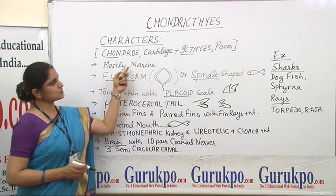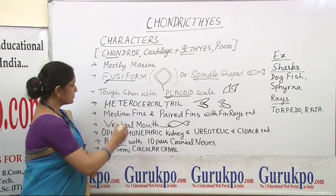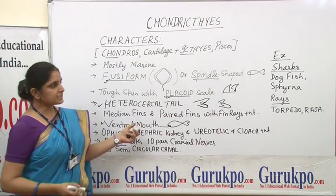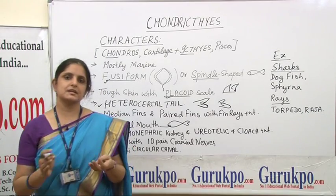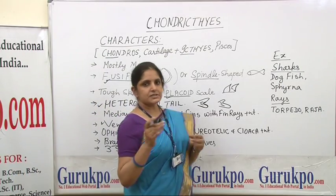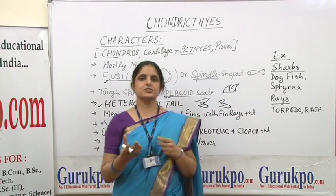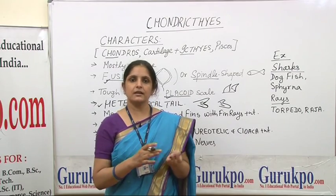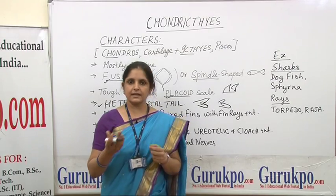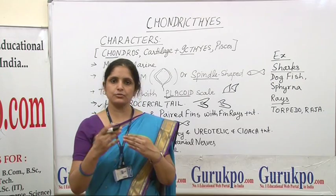To summarize, the special features include body shape, presence of placoid scales, presence of a heterocercal tail, presence of a ventral mouth, and a cartilaginous endoskeleton. These 4-5 characters are unique features of cartilaginous fishes. Main examples are all sharks and rays — such as dogfish (Scoliodon), Sphyrna (hammerhead shark), and various rays like the electric ray, Torpedo, and Raja.